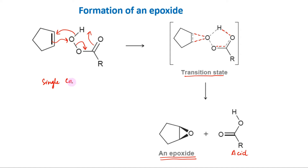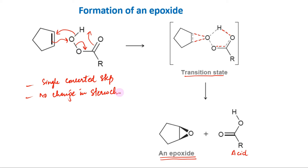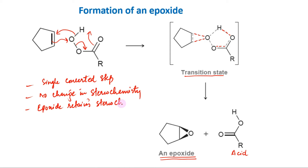Because the epoxidation takes place in one step, there is no opportunity for the alkene molecule to rotate and change its cis- or trans-geometry. Thus, the epoxide retains whatever stereochemistry is present in the alkene.